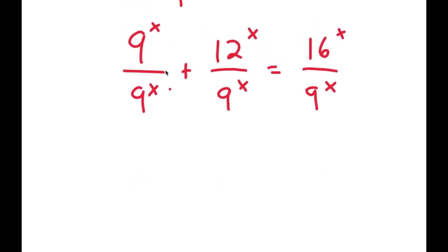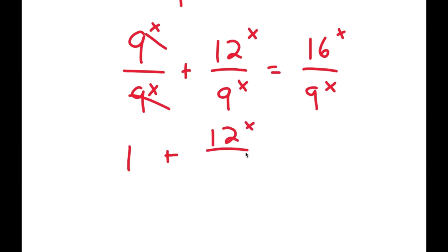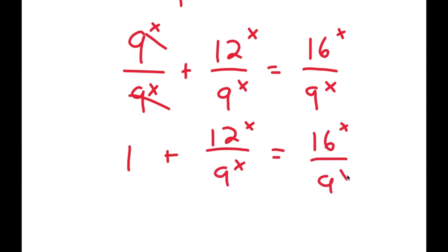Now, 9 to the power of x over 9 to the power of x — those two cancel out and I get 1. So I have 1 plus 12 to the power of x over 9 to the power of x is equal to 16 to the power of x over 9 to the power of x.